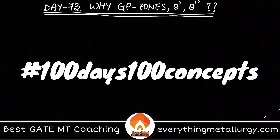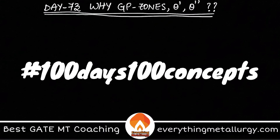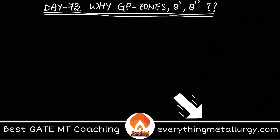Hello guys, welcome to Physics Mythology and welcome to Day 73 of 100 Days, 100 Concepts. Today in this video we'll think about a question regarding precipitation hardening: why are GP zones and intermediate precipitates like theta double prime and theta prime forming? This is the question I want to briefly discuss in this video.